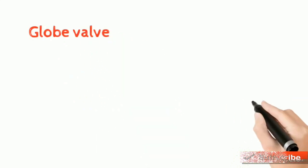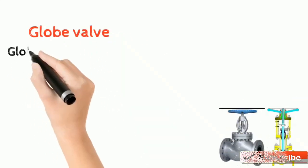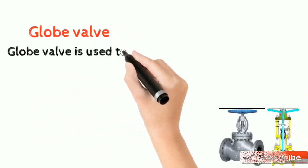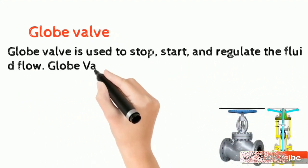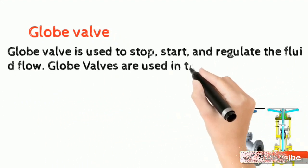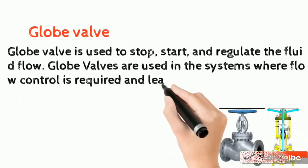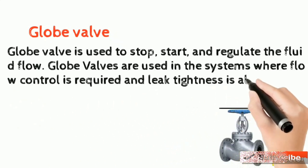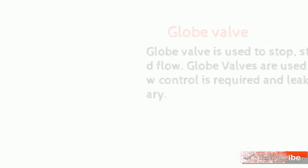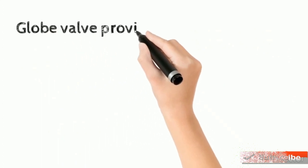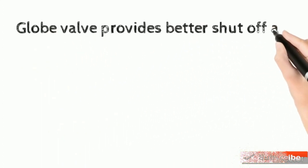Globe valve is used to stop, start, and regulate the fluid flow. Globe valves are used in systems where flow control is required and leak tightness is also necessary. Globe valve provides better shut off as compared to the gate valve and it is costlier than a gate valve.